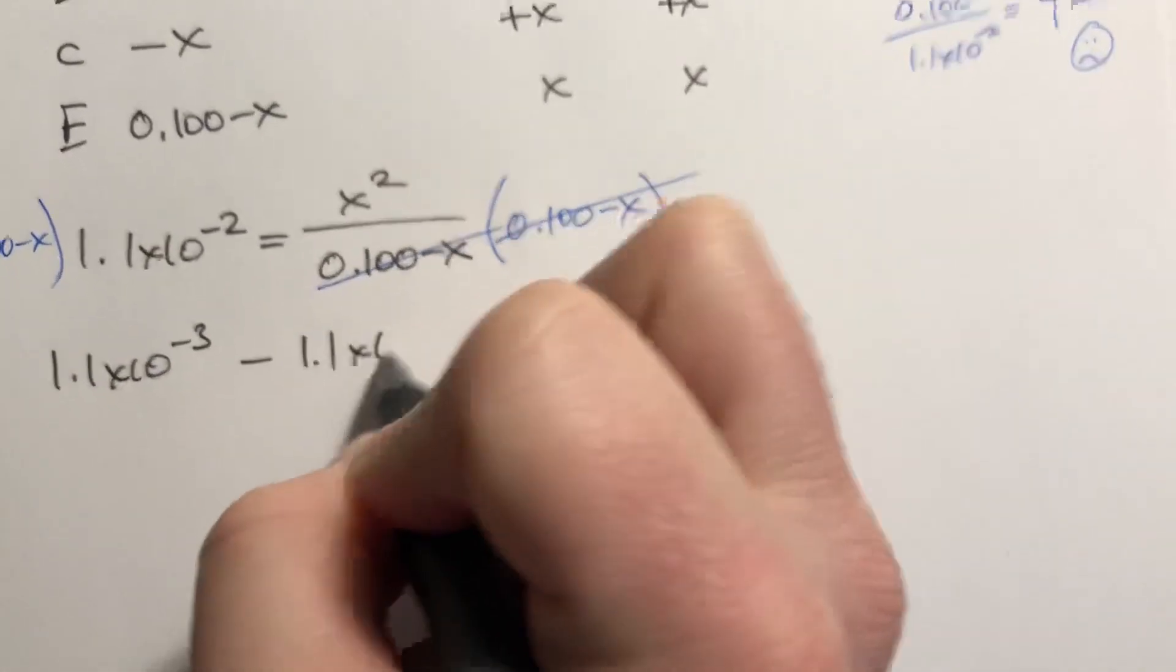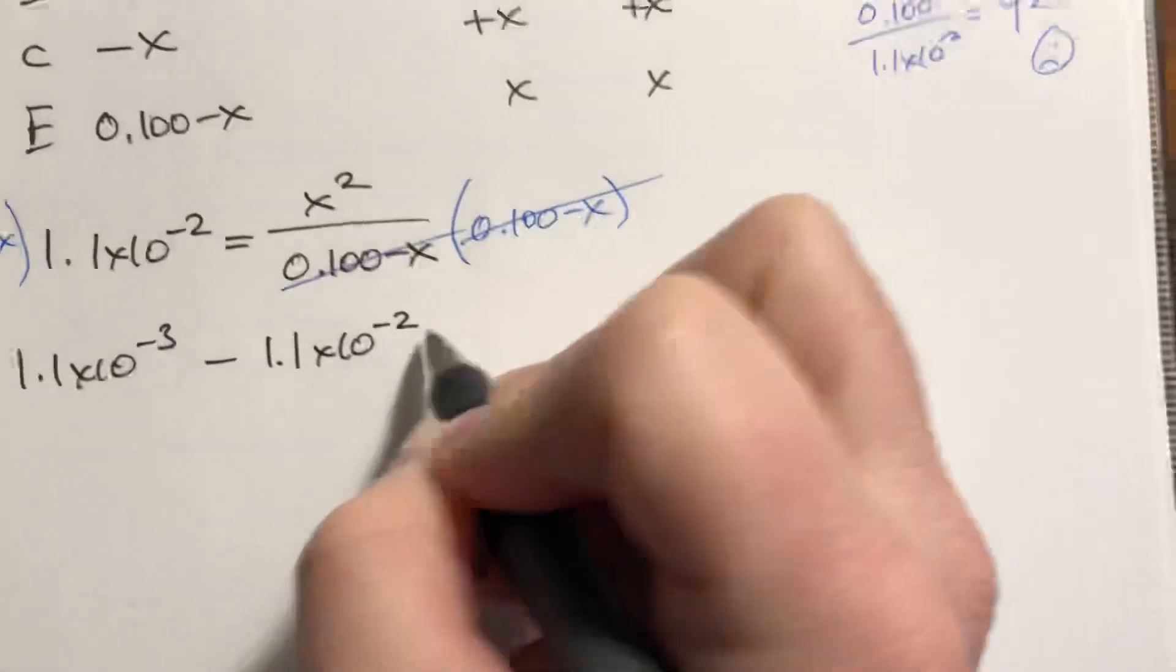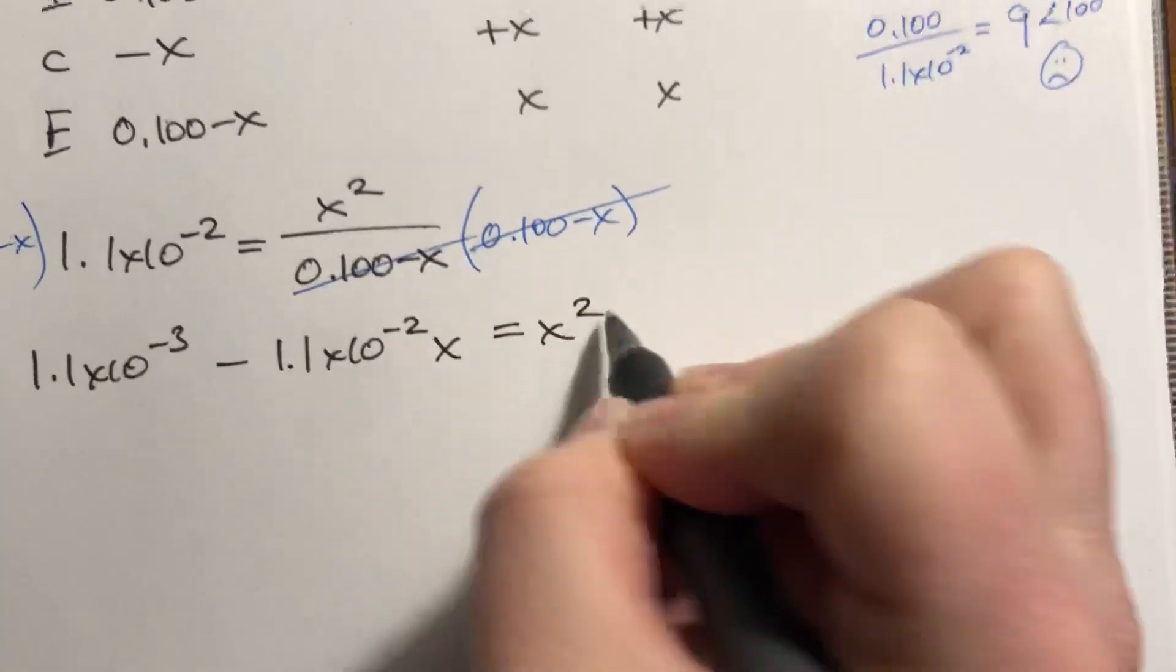Minus 1.1 times 10 to the negative second times x. This is equal to x squared.